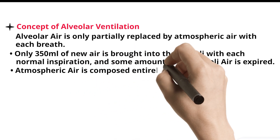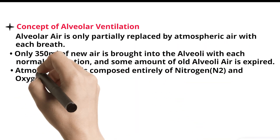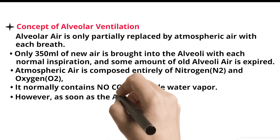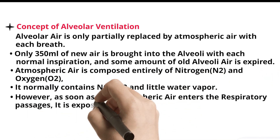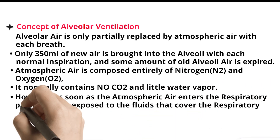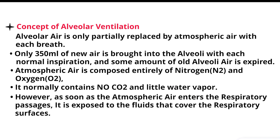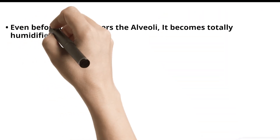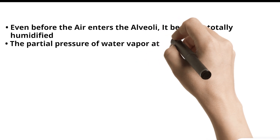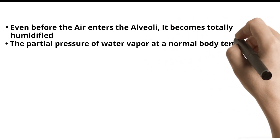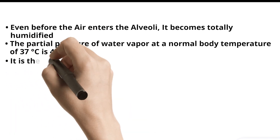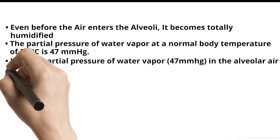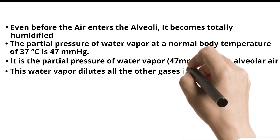Atmospheric air is composed entirely of nitrogen and oxygen (O2). It normally contains no carbon dioxide and little water vapor. However, as soon as the atmospheric air enters the respiratory passages, it is exposed to the fluids that cover the respiratory surfaces. Even before the air enters the alveoli, it becomes totally humidified. The partial pressure of water vapor at a normal body temperature of 37 degrees centigrade is 47 millimeter mercury, which is the partial pressure of water vapor in the alveolar air. This water vapor dilutes all the other gases in the inspired air.